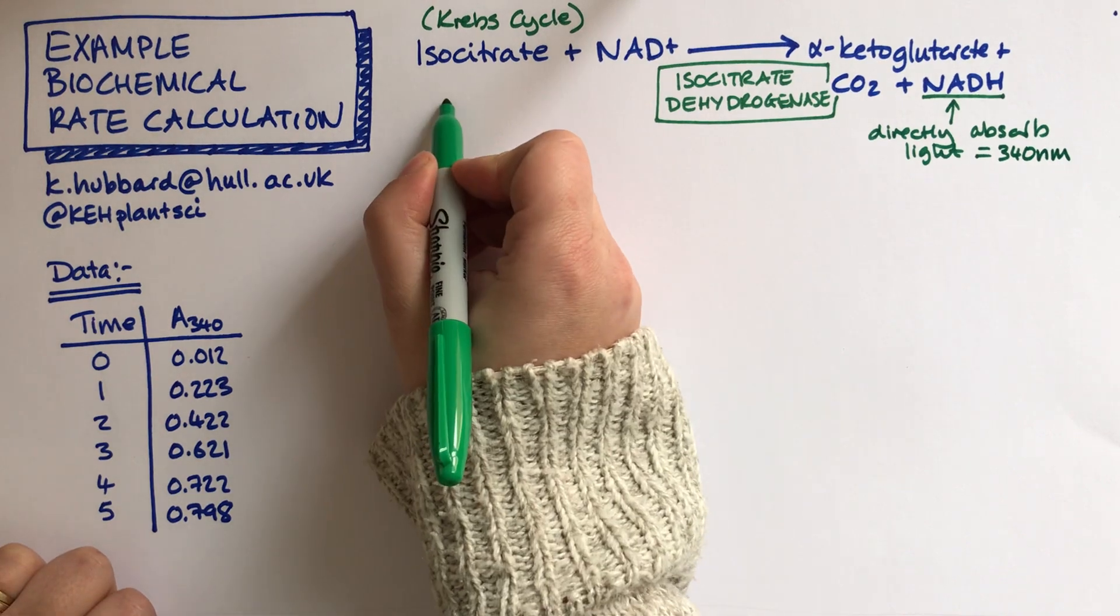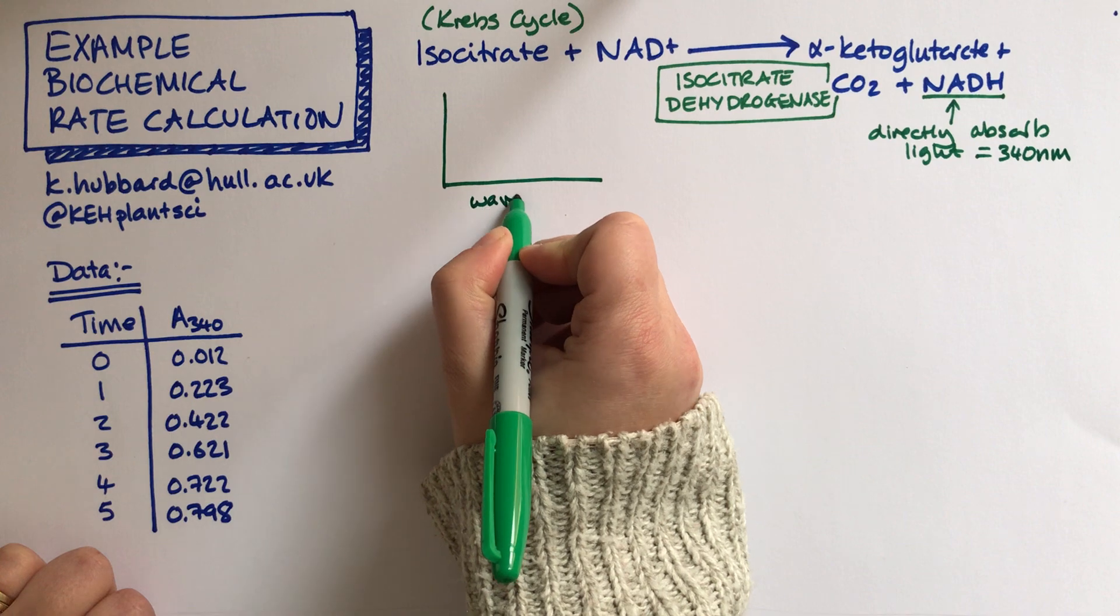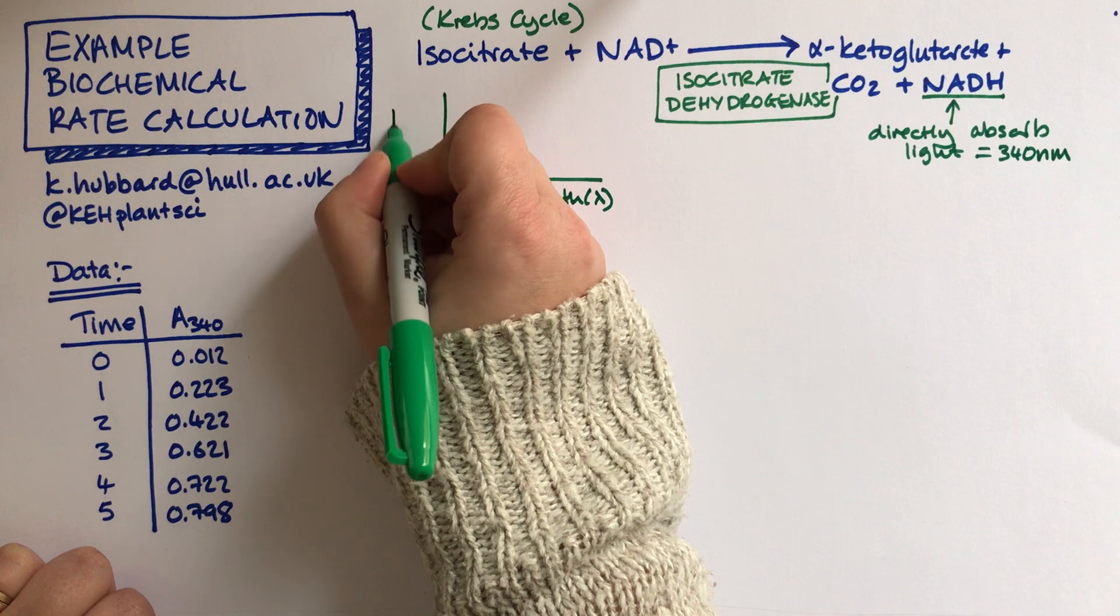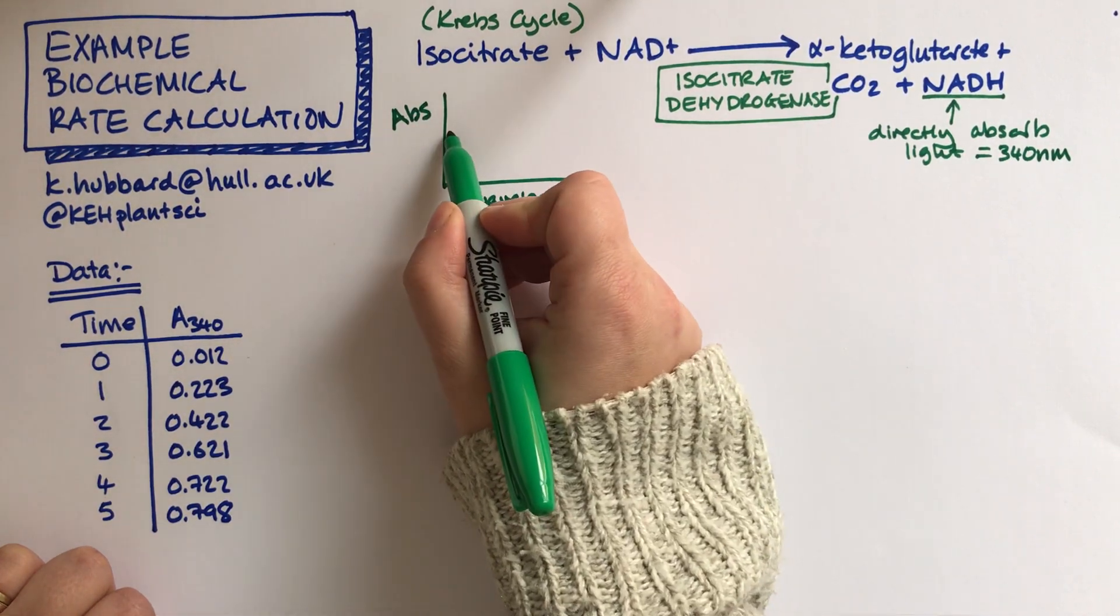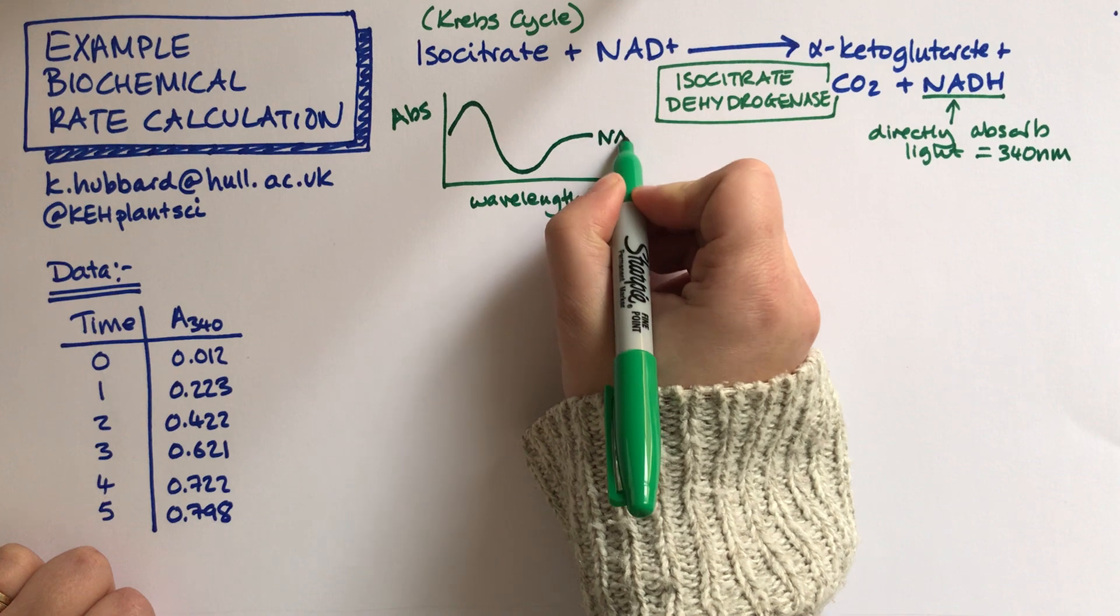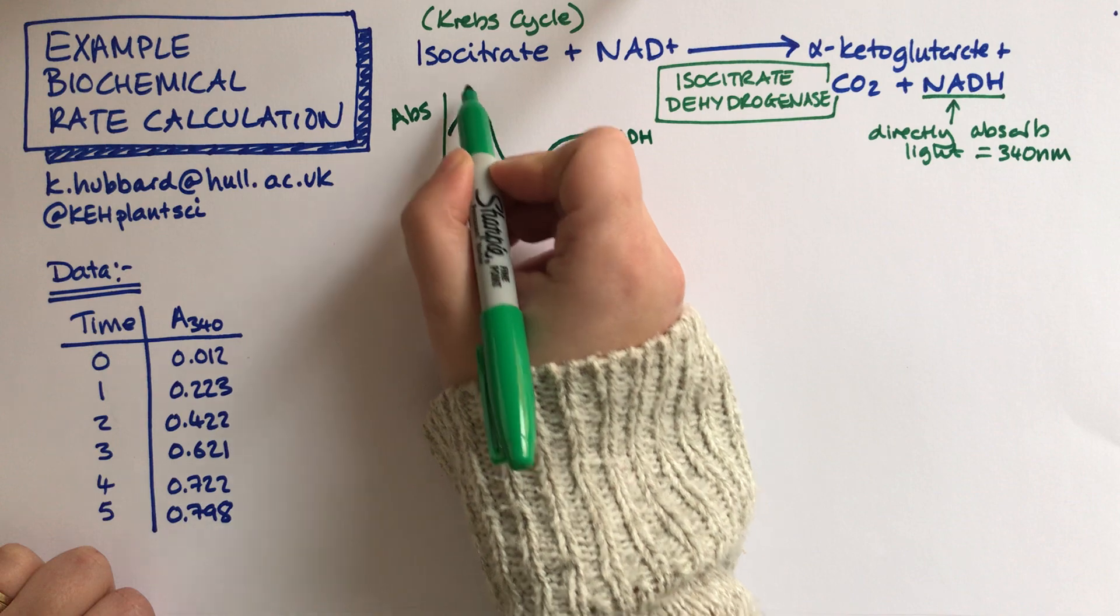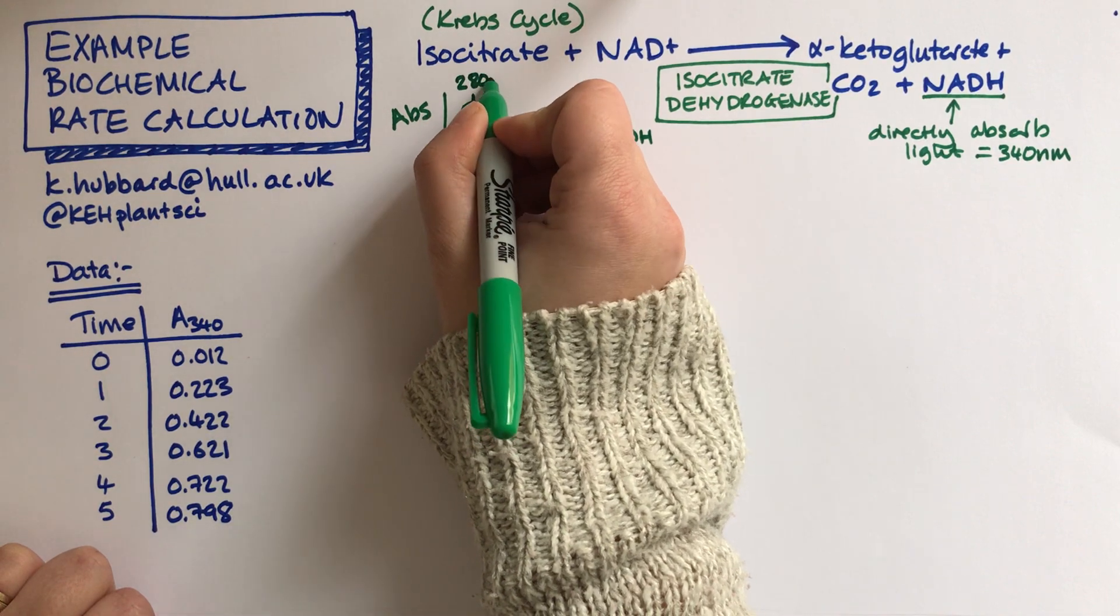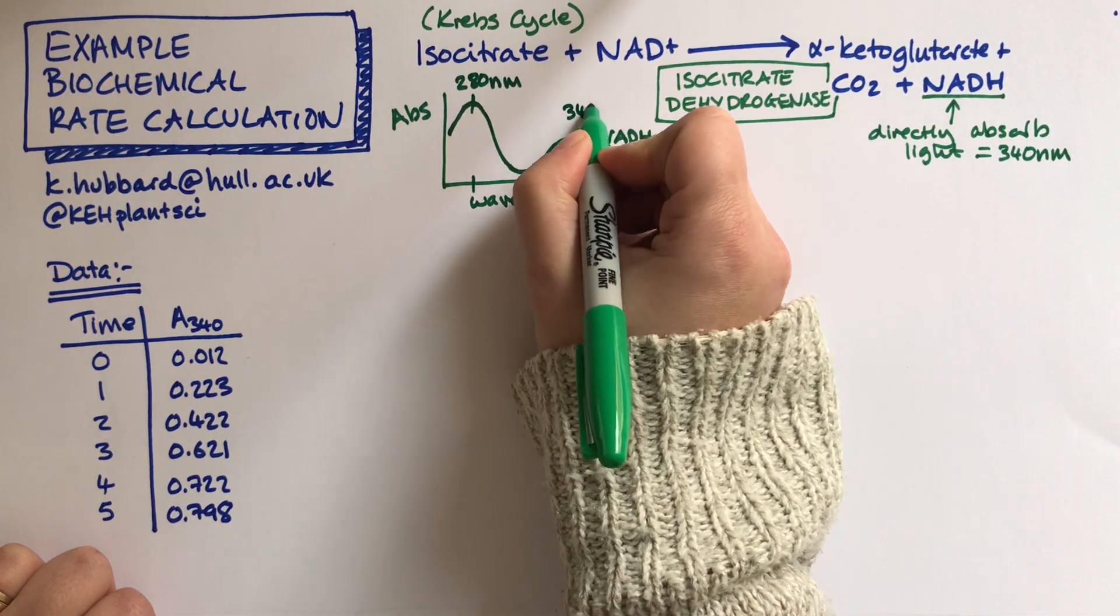So if I just quickly draw what the absorbent spectra of this looks like, if this is wavelength and this is absorbent, then the peak for NADH looks a bit like this. We have a peak at around about 280 nanometers and then another peak at around about 340 nanometers.